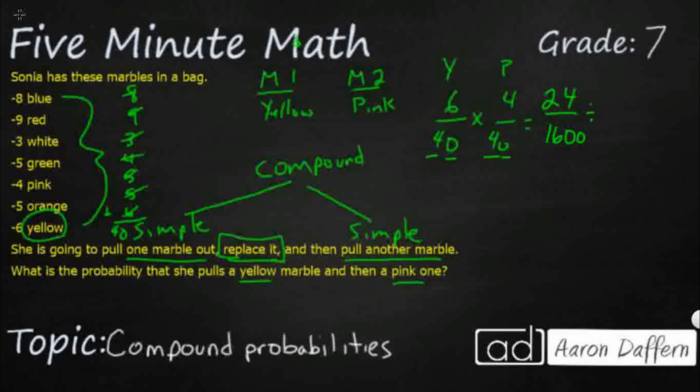Obviously, we're going to need to reduce. Let's simplify by 4s. All right, let's divide by 4. 24 over 4. That's going to be 6. 1600 over 4 goes into 16 four times. And I've got my two 0s. You know what? I can still simplify by 2s. And so, 6 divided by 2 is 3. And then, 400 divided by 2 is 200. So, there we go. 3 out of 200 chance of pulling out a yellow and then a pink.